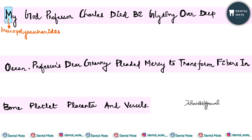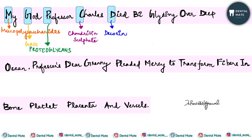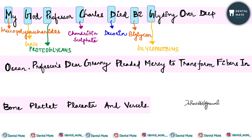The ground substance contains mucopolysaccharides. Under mucopolysaccharides: first are glycosaminoglycans (GAG), next are proteoglycans which contain chondroitin sulfate, decorin, and biglycans. Also under mucopolysaccharides are glycoproteins, which include osteonectin, DC alloprotein, and osteopontin.